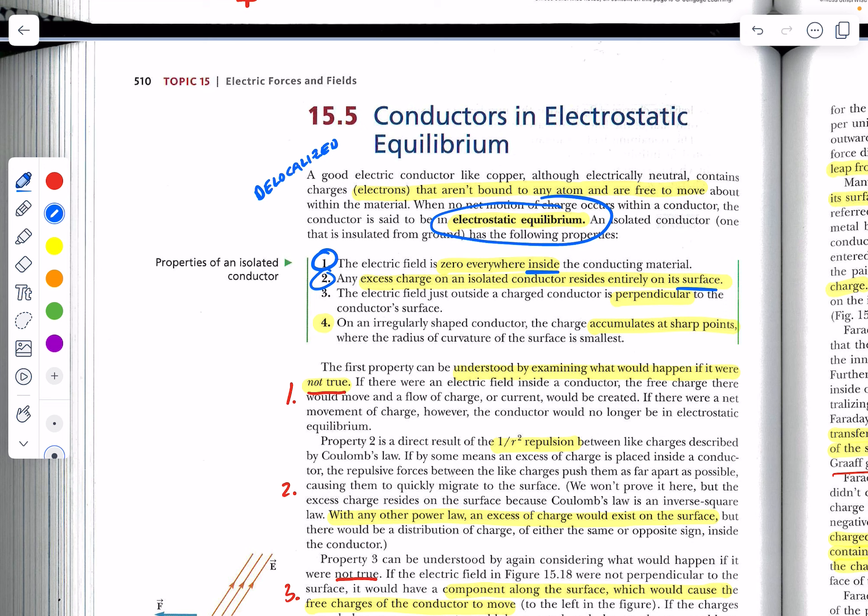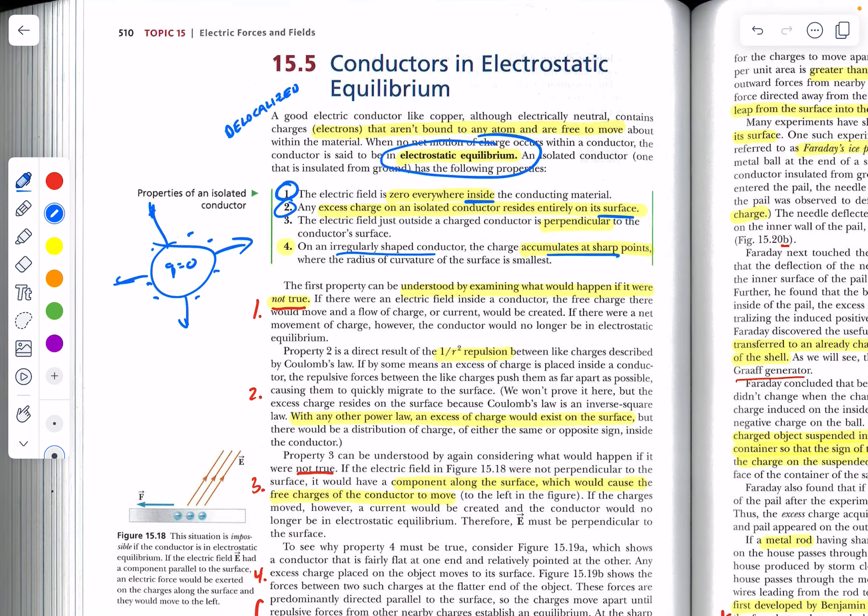Number three. The electric field just outside a charged conductor is perpendicular to the conductor's surface, which means, of course, going outward. Inside, your charge is zero. But your negative charge is going to be around the outside. And then number four. On an irregularly shaped conductor, the charge, interestingly, accumulates at the sharp points. And that's going to require some explanation in just a minute.